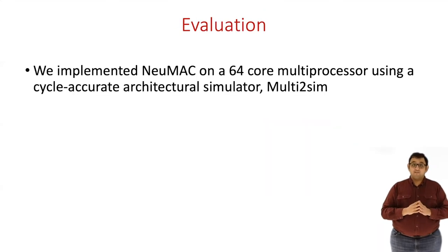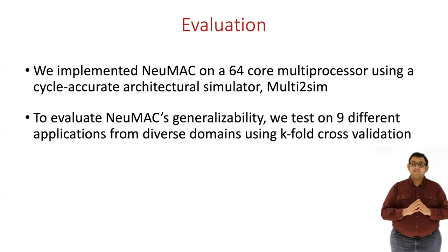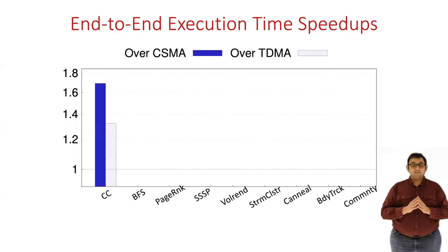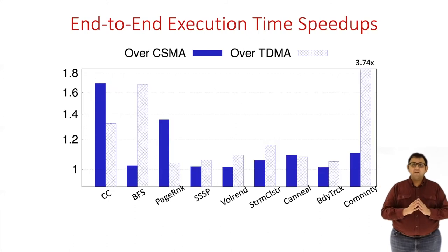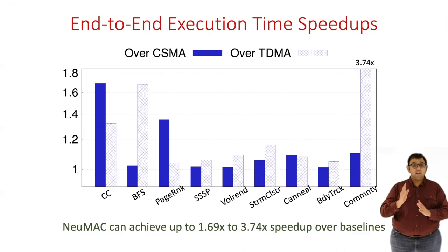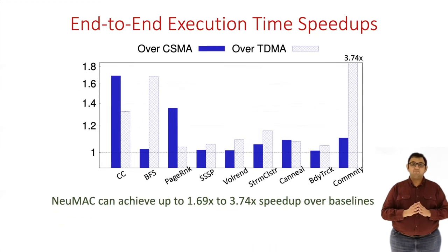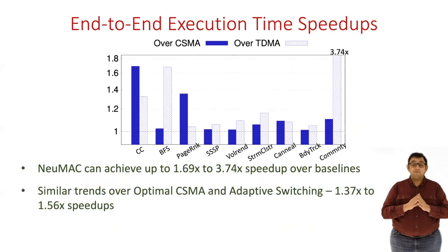We implemented newMAC on a 64-core processor in Multi2Sim, which is a popular architectural simulator, and to evaluate newMAC's generalizability, we test it on nine different applications from diverse domains. This bar graph shows how much speedup newMAC can achieve over the baselines. It is 1.69 times faster than CSMA and 1.33 times faster than TDMA for the CC application. Looking at the speedups across all benchmarks, we can see that neither baseline consistently performs well. newMAC is able to adapt to the application and can achieve up to 1.69 to 3.74 times speedup over the two baselines. We also test newMAC over other baselines such as throughput-optimal CSMA and an adaptive switching protocol, and observe similar trends in application speedup.